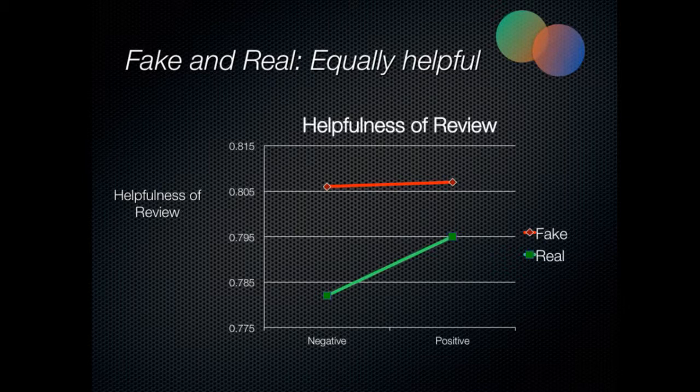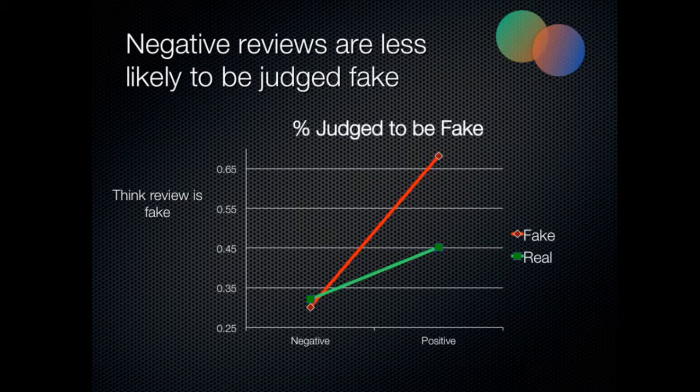What's worrying is, we ask people, do you find reviews to be helpful? And at this stage we haven't told them or asked them to guess if they're fake or real — only we know that. And this is statistically insignificant. So people can't tell the difference between fake and real when it comes to helpfulness — they find them all equally helpful. Fake or real, positive or negative, it doesn't matter. So it's kind of worrying from one point of view. It means people aren't filtering them out when it comes to their helpfulness rating, when they give us a thumbs up or thumbs down.